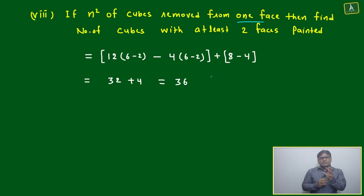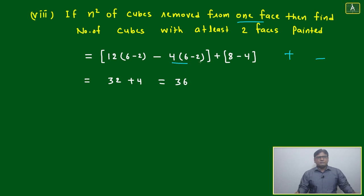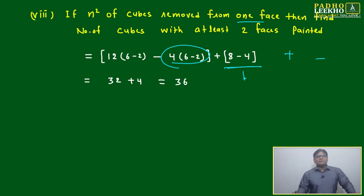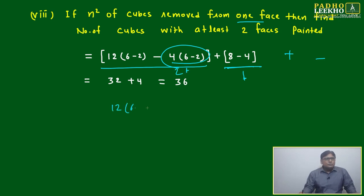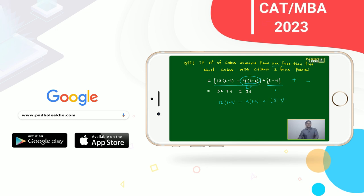For the extension problem, use the same technique. n² cubes are removed from one face. At least two faces painted will include two-face and three-face cubes. After removal, the four corners exposed on that face are out, so 4×(6−2) edge cubes become effectively two-face painted. The 4 corner cubes are removed. Calculation: 12×(6−2) minus affected edges plus 4 remaining corners gives 32 + 4 = 36.